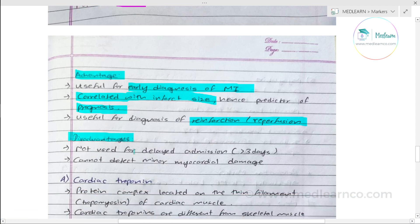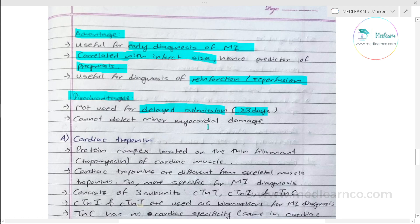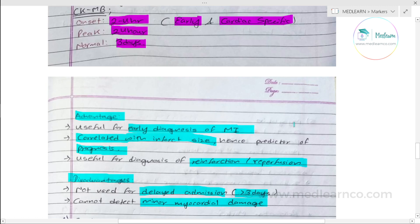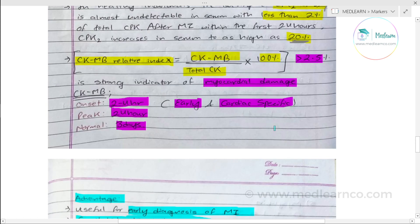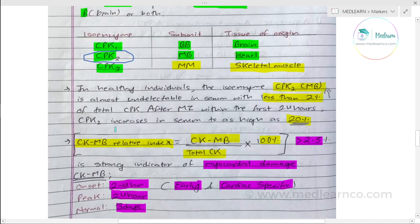The disadvantage of CK-MB is that it cannot be used for delayed admission. Since it returns to normal by 3 days, if a patient presents at 4–5 days, CK-MB cannot be used. So while it is early and cardiac specific, it is not useful for late presentations.